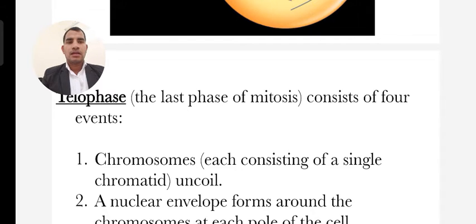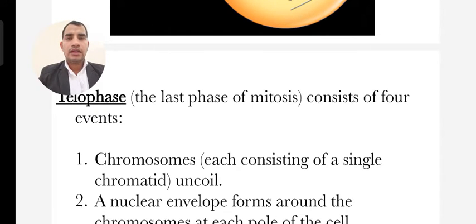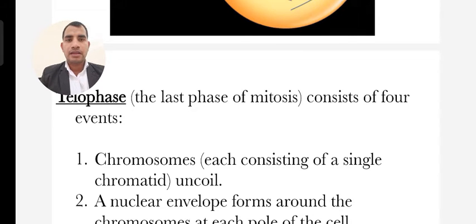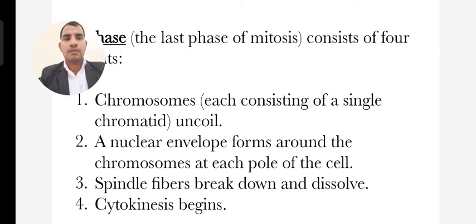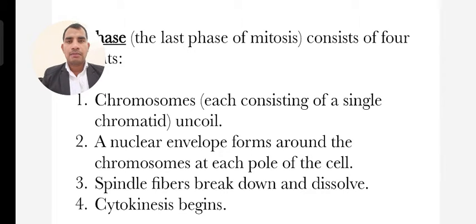The next stage is telophase, the last phase of mitosis. In telophase, chromosomes each consist of a single chromatid and are separated equally and uncoiled. A nuclear envelope forms around the chromosomes at each pole of the cell. Spindle fibers break down and dissolve. After the spindle fibers break down, the chromosomes have reached their respective centrioles.